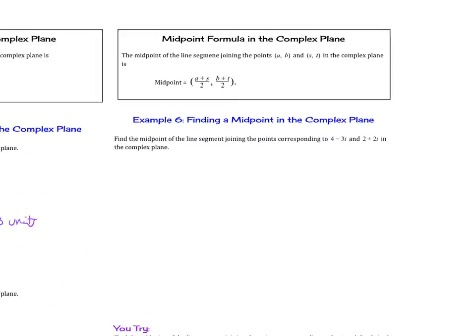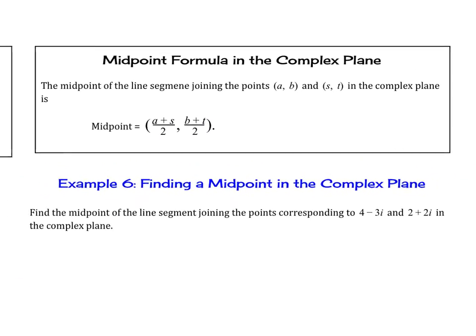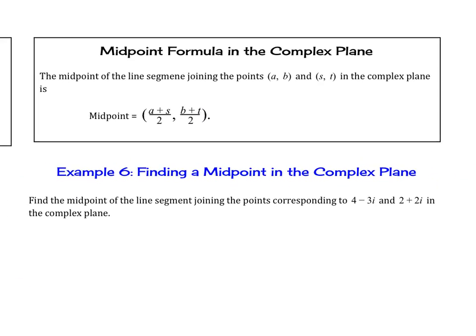The last thing we're going to do is a midpoint formula in the complex plane. The midpoint of the line segment joining the points a, b and s, t in the complex plane is the midpoint, which is a plus s over 2 and b plus t over 2. So the horizontal components a and s, and then the vertical b and t, dividing each by 2.